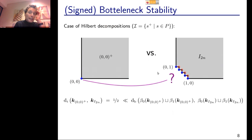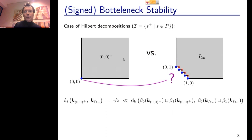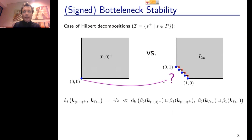Multigraded Betti numbers were believed to be unstable. Consider a free module K supported on the upset of (0,0), versus another module where the bottom-left part is removed, giving a staircase shape with generators and relations. The first module has one generator in Betti degree 0, while the other has many generators in degree 0 and relations in degree 1. With a perfect matching requirement the bottleneck distance would be infinite, whereas the interleaving distance between the modules is actually one half.